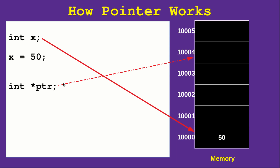We have another memory address. This is a star pointer, which is a PTR. This is the story. So let's look at this. X has a memory address. PTR has a memory address. If you want to write a story, you can write a memory address. X has a memory address. PTR has a memory address. If you want to write a memory address, you can write a memory address.